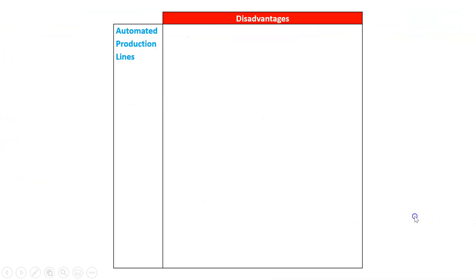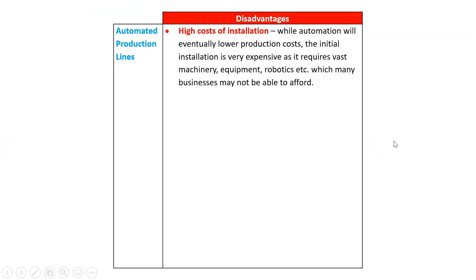What about some disadvantages? The study design says we also need to consider a few of those. Well, there are high costs. You do save costs on labor, but there is a really high cost to install and set up all this machinery. And let's be realistic — that's actually not possible for a lot of businesses. Small to medium businesses would love to automate things, but maybe the cost puts it out of their range.